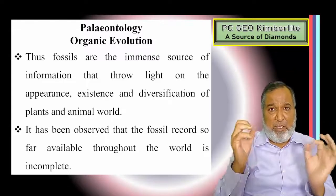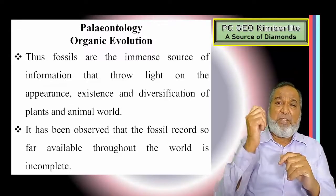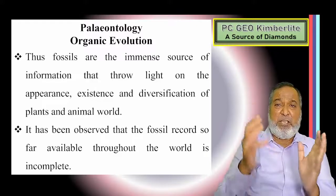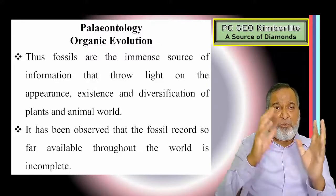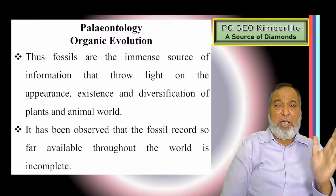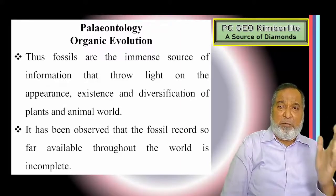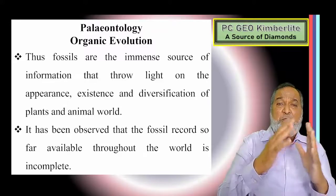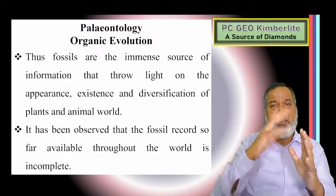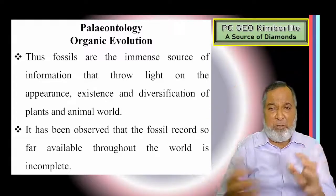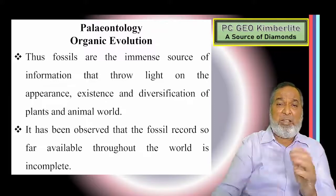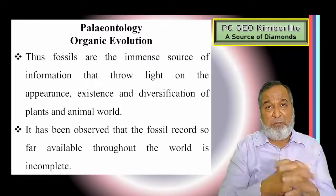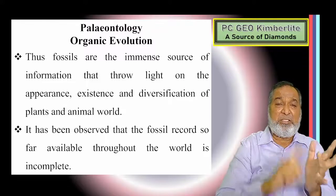Fossil is the main source from where we can study organic evolution — that is the tool. Whatever fossil is there, it is found in the rock. These fossils are an immense source of information, giving light on how animals lived in the past. Of course we will study morphology, appearance, existence, diversification, and what environmental conditions were suitable for those plants and animals. That is very important for the study of appearance, existence and diversification.